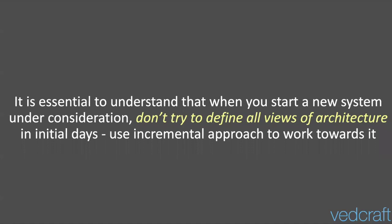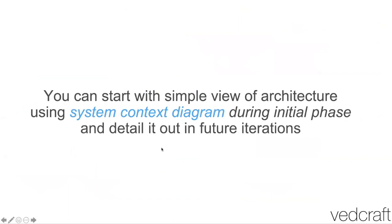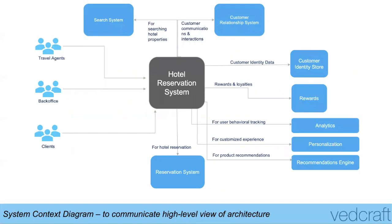One important tip: don't try to define all views in one single diagram — it's going to be a mess. You can incrementally develop it in an agile way rather than doing everything in one shot. Simply start with a system context diagram. Here's an example of a hotel reservation system — a 50,000-feet view or level zero of your software architecture. From there, you can start unpacking each component, creating their relationships and interactions, detailing it out incrementally.